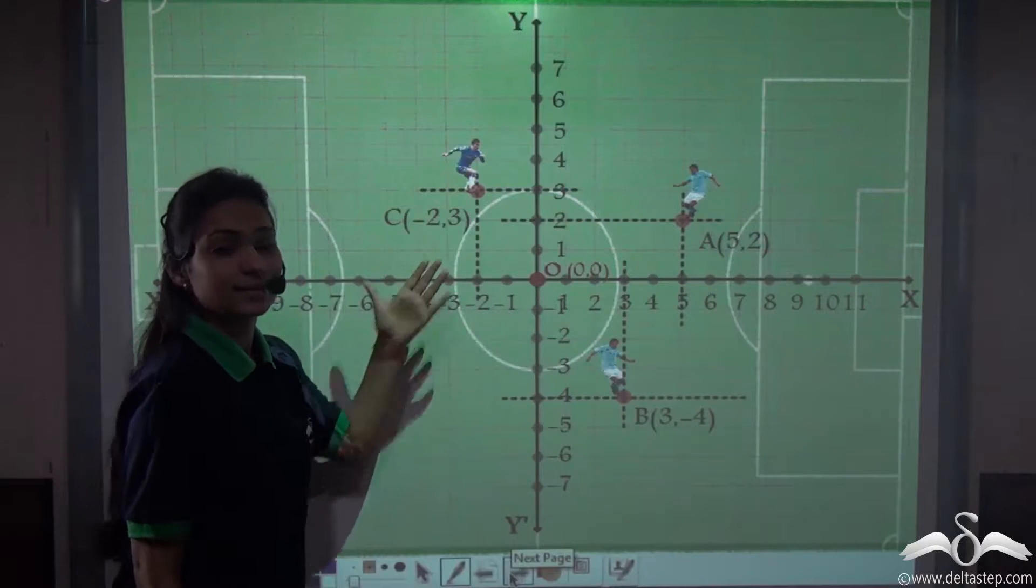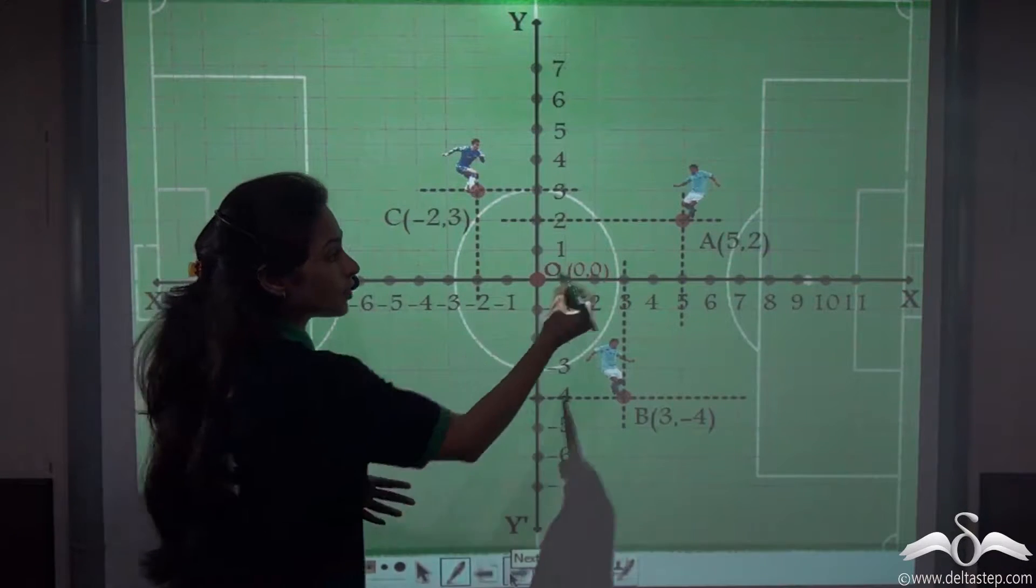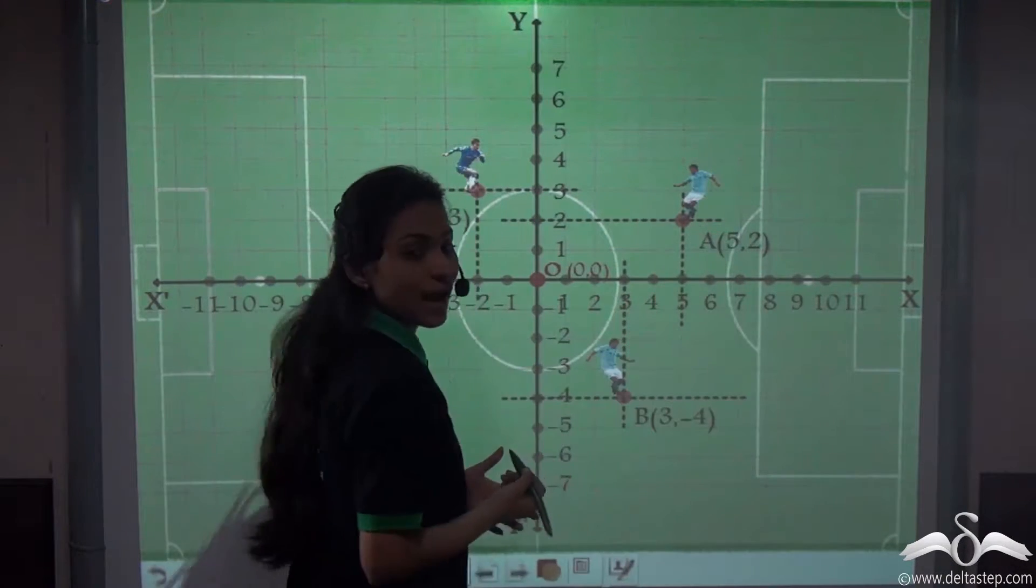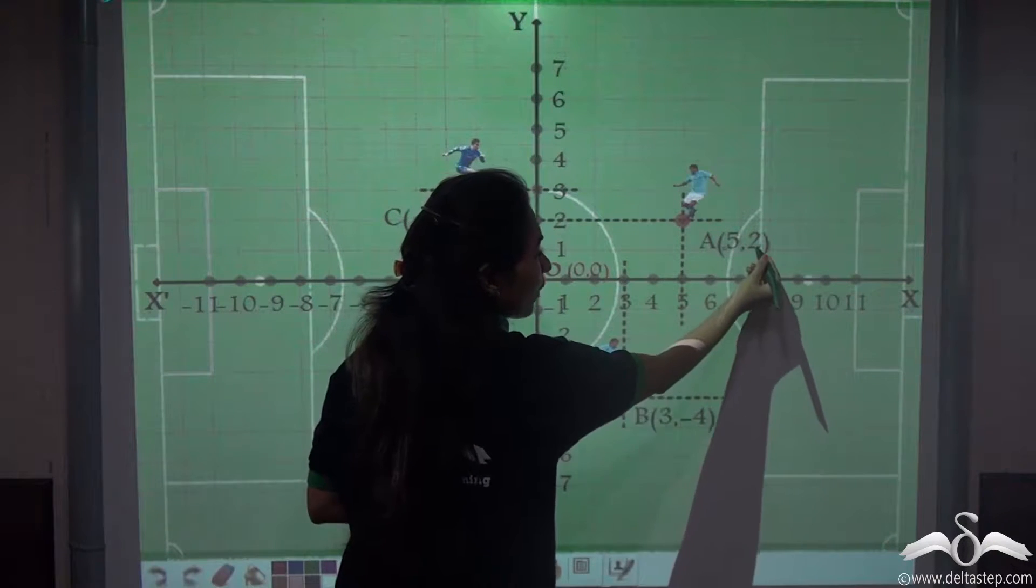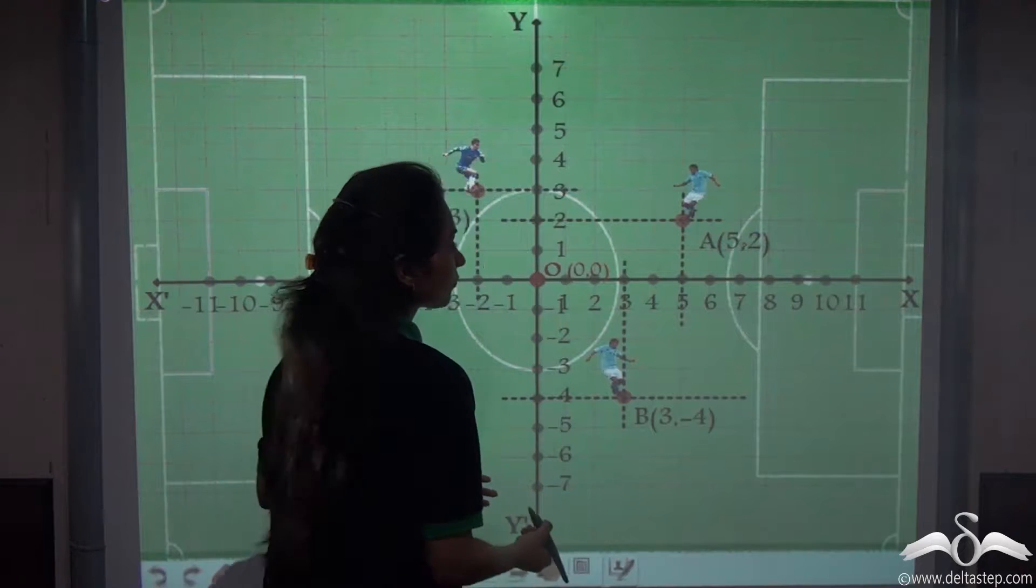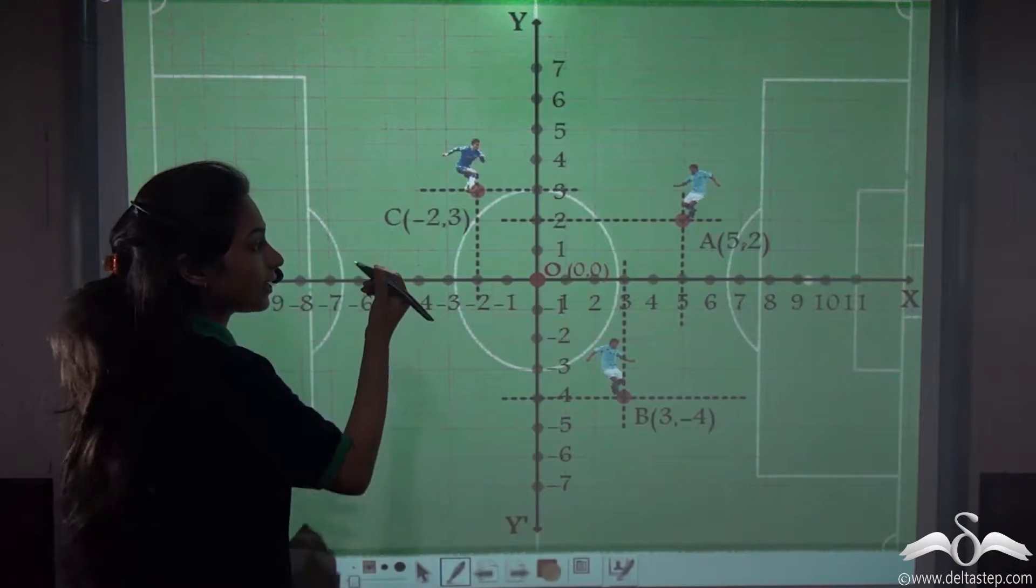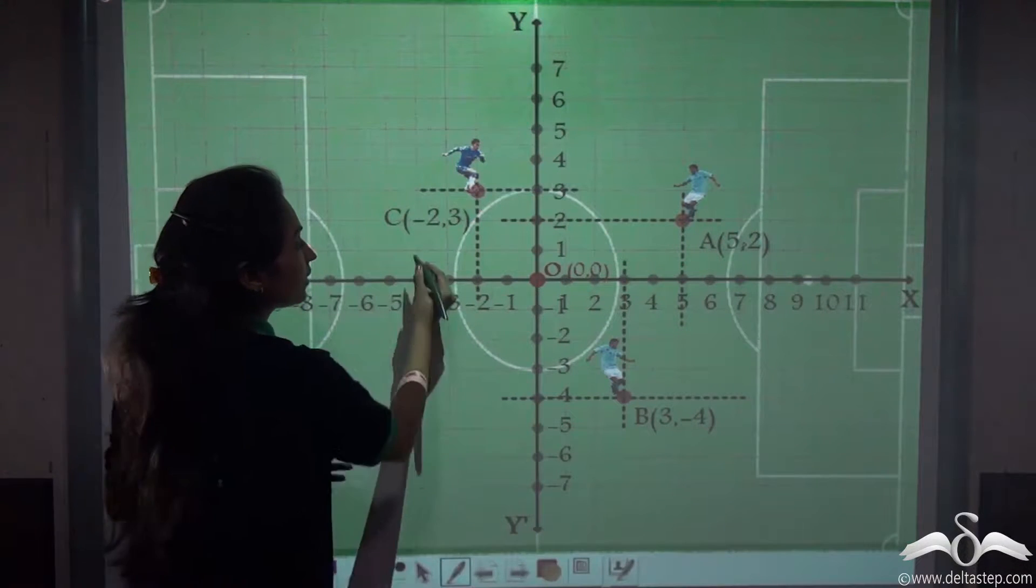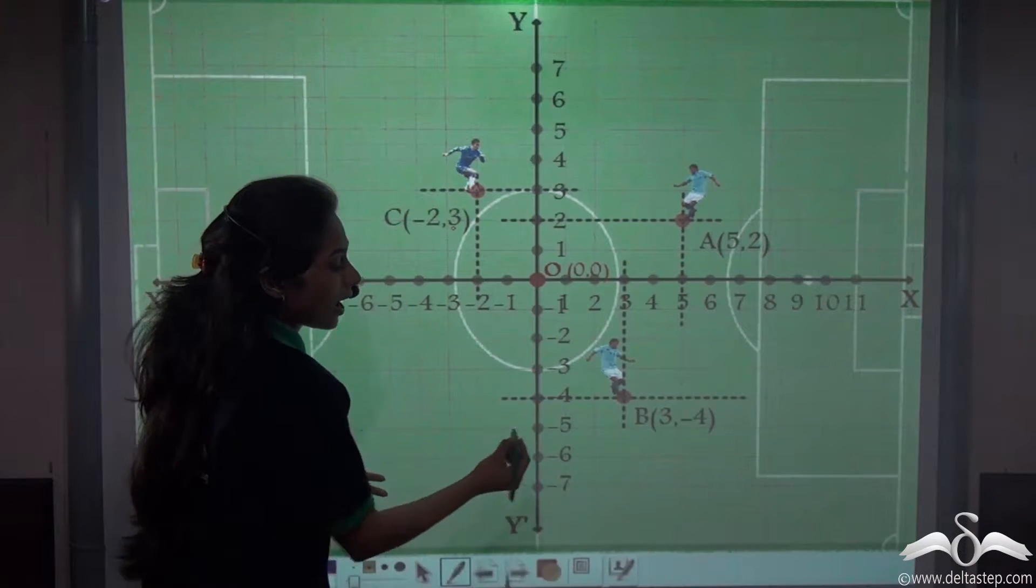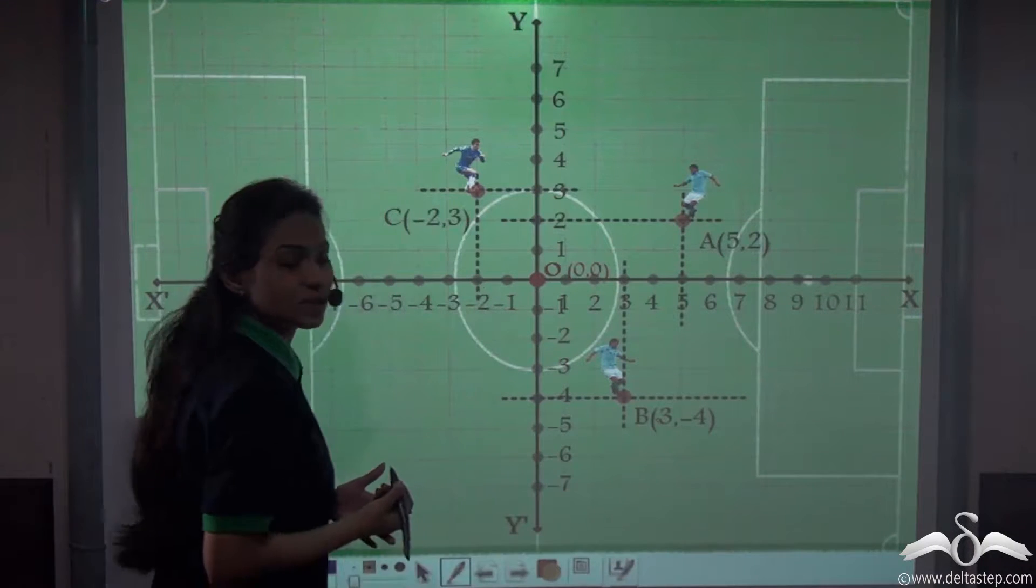He places three players at these three points. The first player, say he is placed at point A with the x coordinate at 5 and the y coordinate at 2, and he places the second and third players at point C and point B with the coordinates at (-2, 3) and (3, -4).